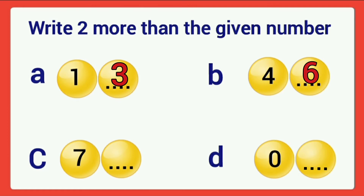Next C, the given number is seven. Two more than seven is nine. We add two more to seven, so the answer is nine. Next D, the given number is zero. Two more than zero — we want to count two forward from zero. The number is two. Two more than zero is two.